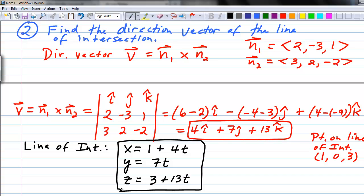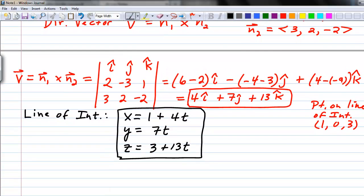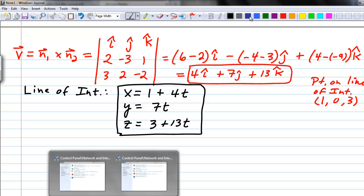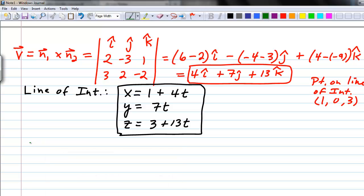Now we have to check and see that it worked. We're going to verify this visually in a moment. But first I wanted to show you that you can algebraically check this as well. All we need to do is find a second point on the line of intersection and verify that it works in both plane equations. Let's let t equal 1, just another value other than 0.